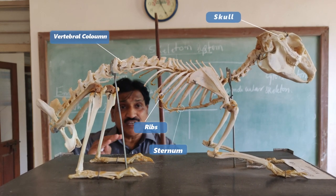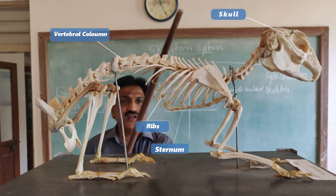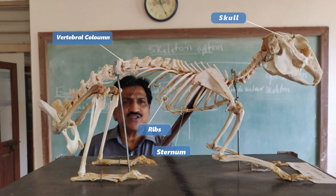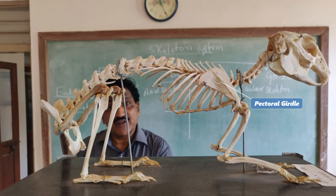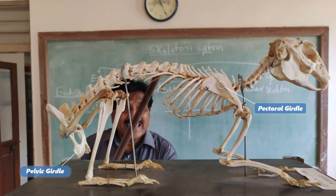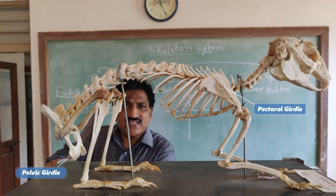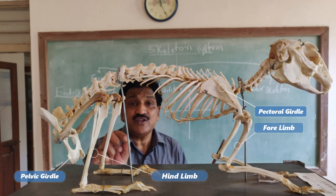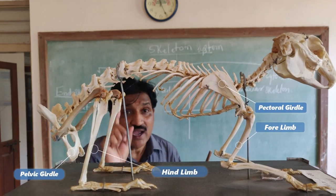The appendicular skeleton includes the transverse axis. It includes the girdles: the pectoral girdle on the anterior side and the pelvic girdle on the posterior side. The pectoral and pelvic girdles have limbs — the forelimbs and hind limbs.